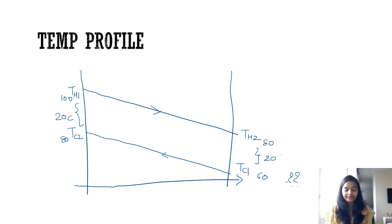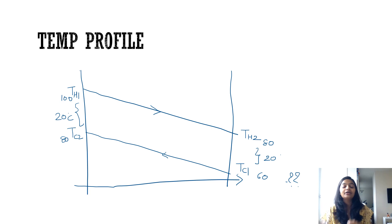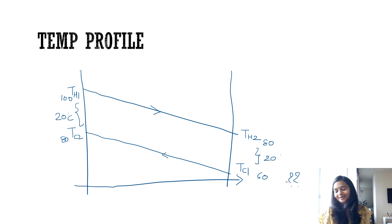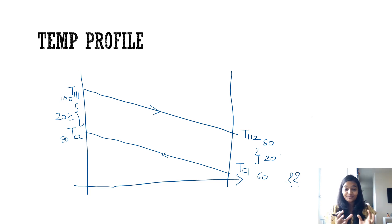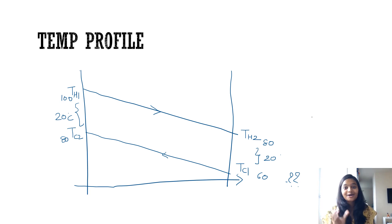Now, what happens when you have a constant temperature difference at all points? For example, the hot fluid is cooled from 100 to 80 degrees while the cold fluid is heated from 60 to 80 degrees, giving a temperature difference of 20 degrees at each and every point. Can you use log mean temperature difference in this case, and how do you approximate it? Please let me know in the comments — this question has also been asked many times in GATE exams.